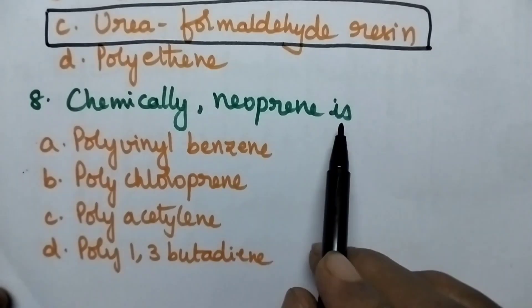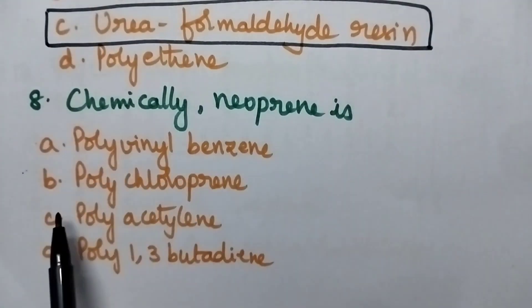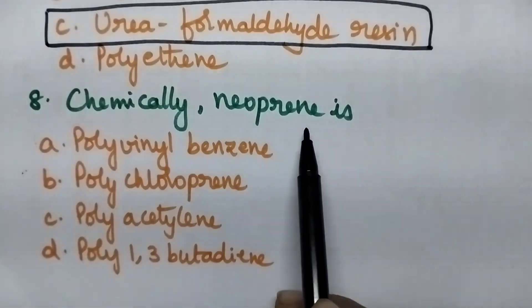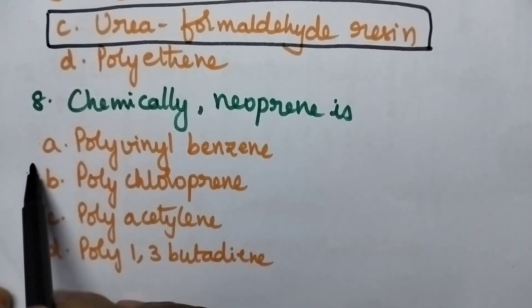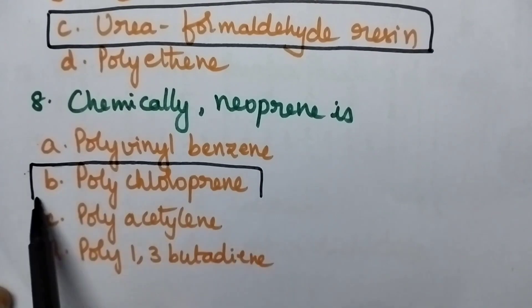Chemically neoprene is? A. Polyvinyl benzene, B. Polychloroprene, C. Polyacetylene, D. Poly 1-3-butadiene. Neoprene is also known as polychloroprene. So option B is the right answer.